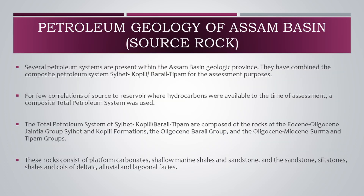Now let's discuss the Petroleum Geological Aspects of Assam Basin. Several petroleum systems are present within the Assam Basin Geologic Province. They have combined the composite petroleum system Silet-Coppili-Barail-Tipam for assessment purposes. A composite total petroleum system was used for correlations of source to reservoir where hydrocarbons were available. The total petroleum system of Silet-Coppili-Barail-Tipam is composed of rocks of the Eocene-Oligocene Jaintia group Silet and Coppili formations, the Oligocene Barail group, and the Oligocene-Miocene Surma and Tipam groups. These rocks consist of platform carbonates, shallow marine shales and sandstone, and sandstone, siltstones, shales, and coals of deltaic, alluvial, and lagoonal facies.